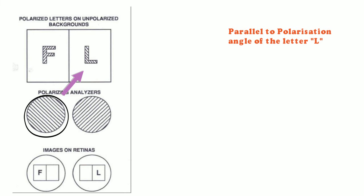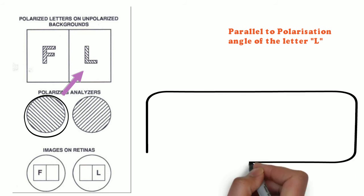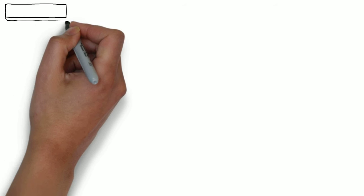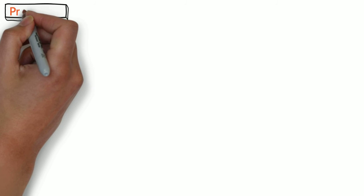Here in this figure, the analyzer before the right eye is parallel to the polarization angle of letter L. Since the analyzer is parallel to the polarized letter, 50 percent of light from the letter and 50 percent of light from the background pass through the analyzer, and both light rays intersect each other. Thus an image of a white blank field is formed on the retina of the right eye.